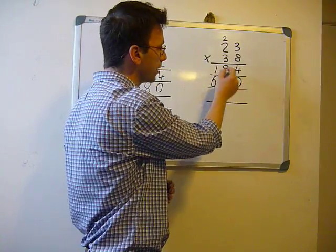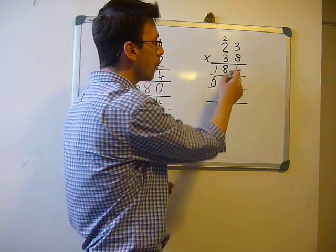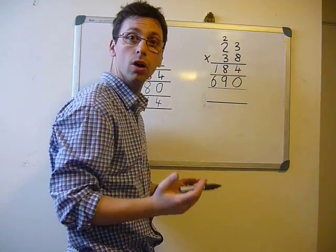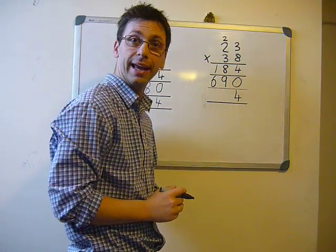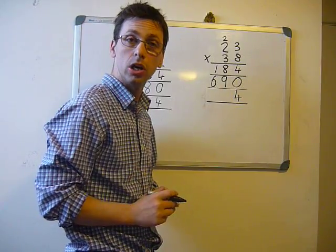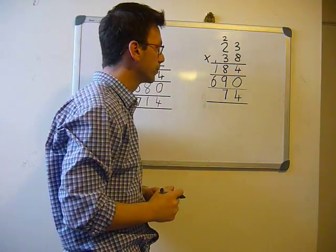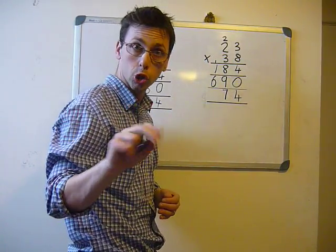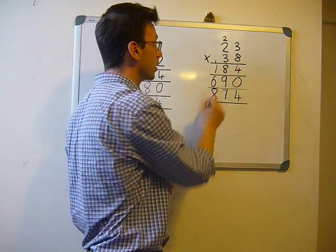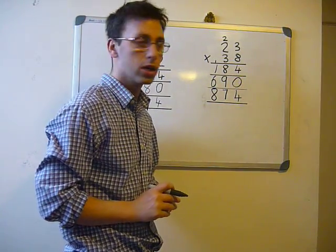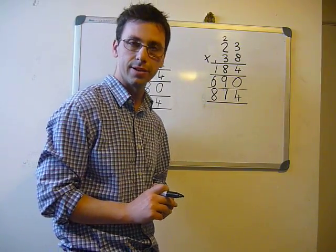See how all the numbers are underneath each other. Now it's time to add them up. 4 plus 0 equals 4. 8 plus 9 equals 17, so we place the 7 down here and carry the 1. 1 plus 1 equals 2 and 6 equals 8. There you have it, 23 times 38 equals 874.